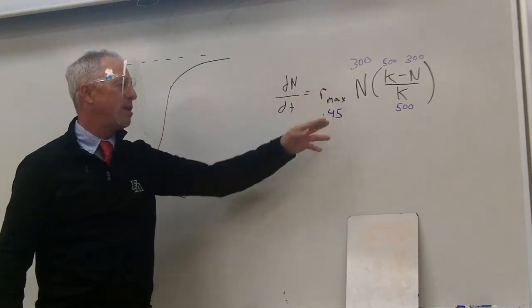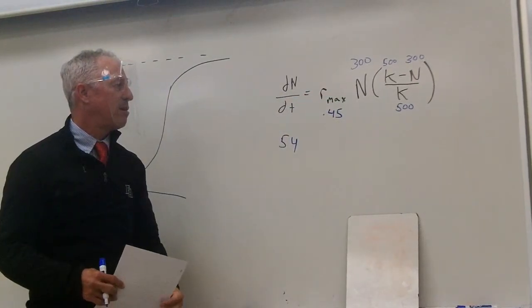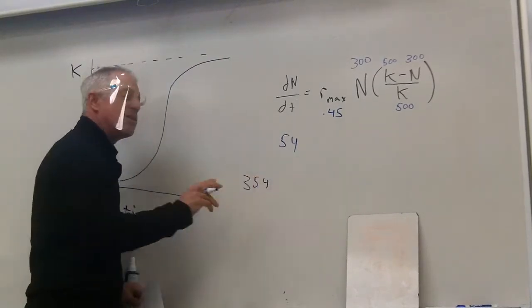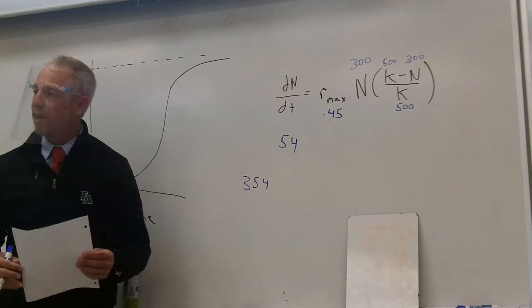So we started at 300. What will we get after the week goes by? How many will it be? 354. 354. Because we added 54.